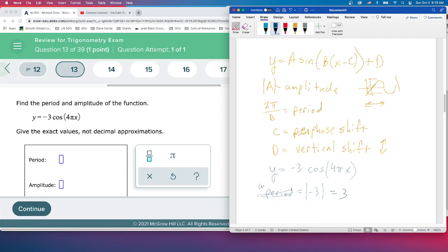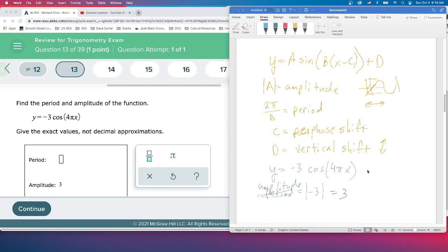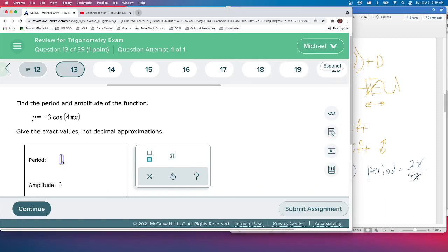The period is going to be 2 pi over b. b is 4 pi. Pi's cancel, 2 over 4 is 1 half, so our period now is 1 half. And that is problem 13.